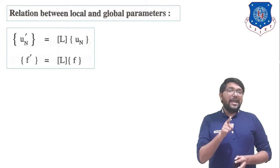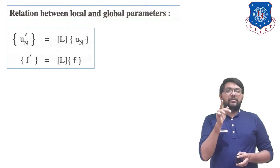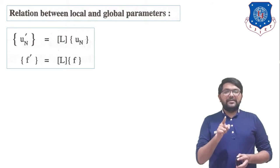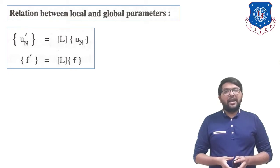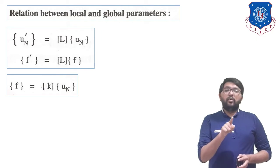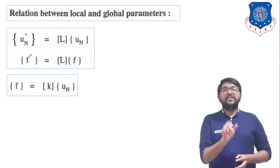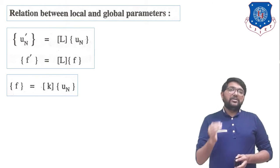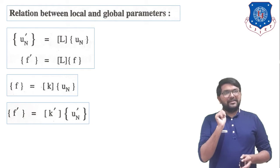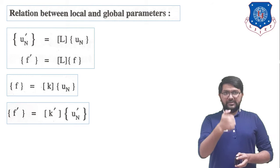Now, UN' = L·UN relates local and global displacement vectors, and F' = L·F relates local and global force vectors. Also, F = K·UN is the stiffness equation — force equals stiffness times deflection. And F' = K'·UN' is the same equation in local coordinates.